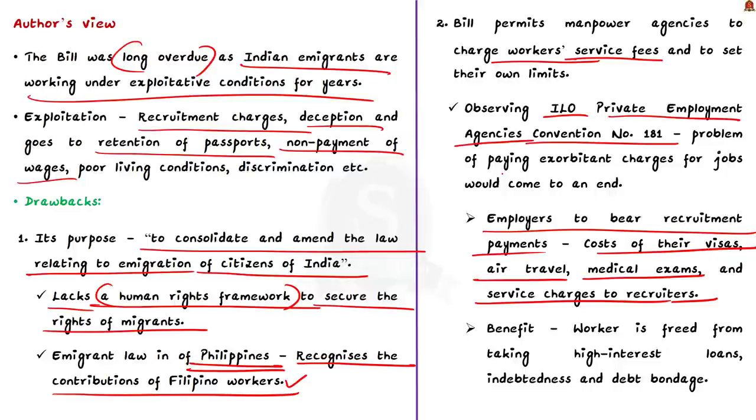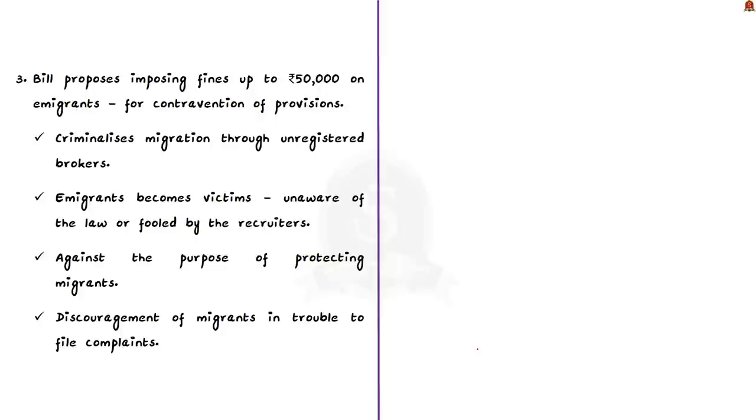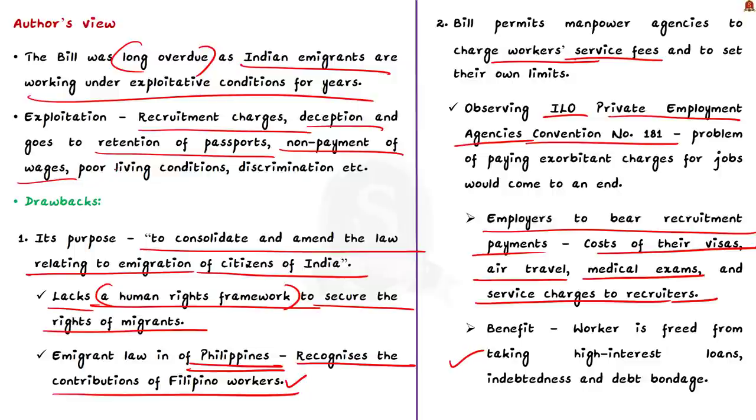For example in Saudi Arabia they are paying around $1500 on average as recruitment charges and in Qatar around $1150 on average. Even though a part of these charges are legitimate, the amount is highly excessive of the real cost of recruitment and that is why it becomes exploitative. If the employee takes care of this particular amount then it would help the worker because the worker will be freed from taking high interest loans, need not be indebted to anyone and will be free from debt bondage, that is forced labor. These issues could be taken care of if the employer is made accountable for this amount.